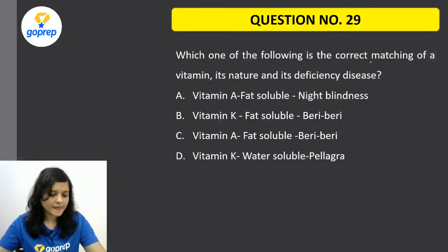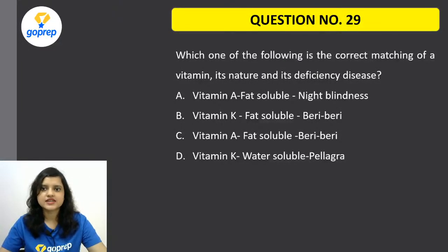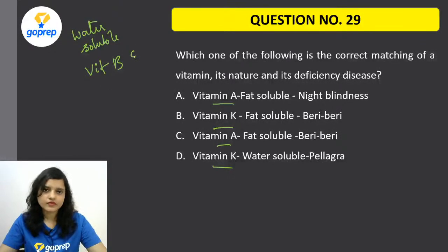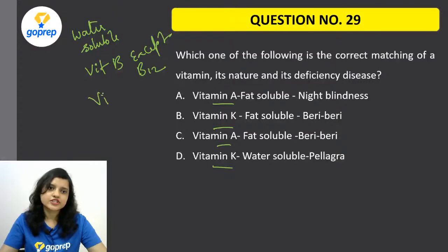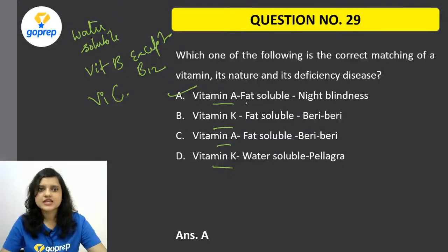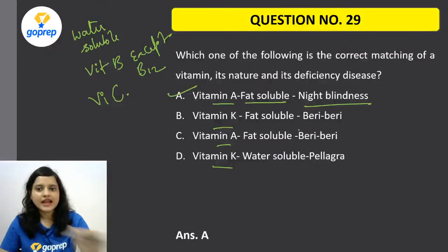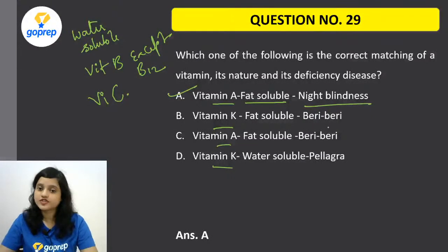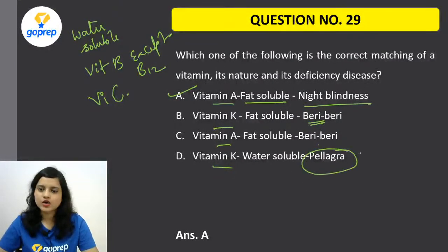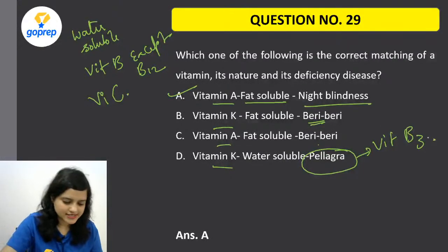Question 29: Which is the correct matching of a vitamin, its nature, and its deficiency disease — Vitamin A, K? Water-soluble vitamins are Vitamin B (except B12) and Vitamin C; the rest are lipid-soluble. The correct option is A — Vitamin A is fat-soluble and its deficiency causes night blindness. Vitamin B1 deficiency causes beri-beri. Vitamin A deficiency causes night blindness. Vitamin K deficiency causes bleeding disorder. Pellagra is caused by Vitamin B3 deficiency.